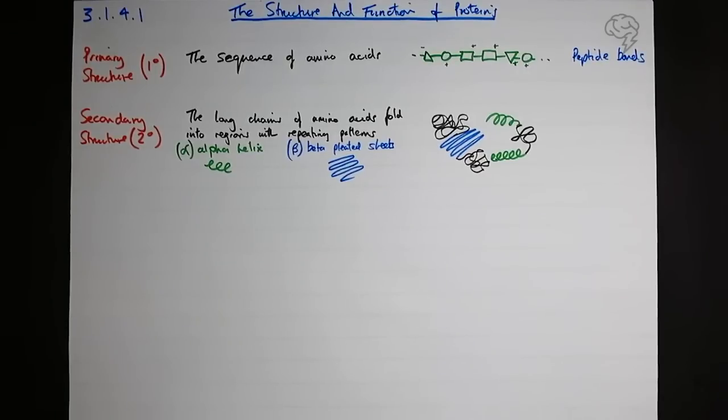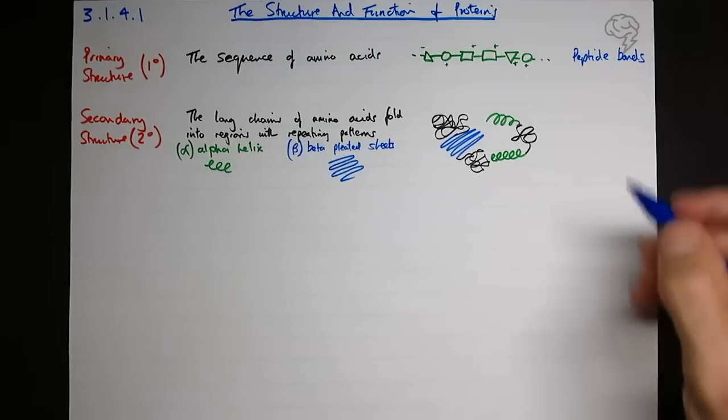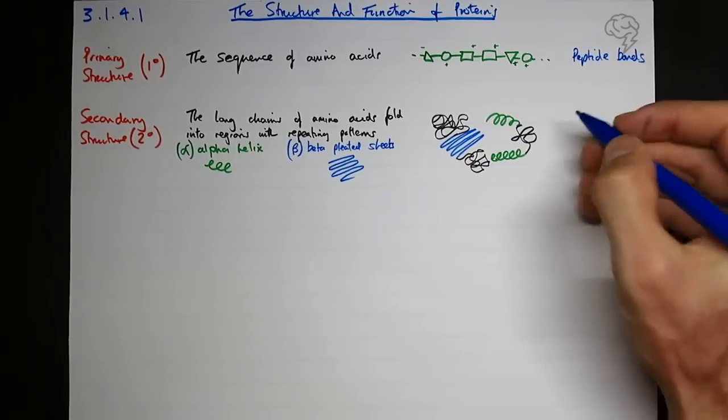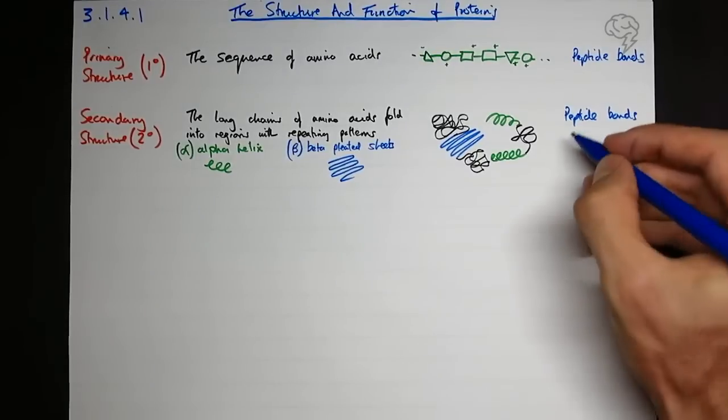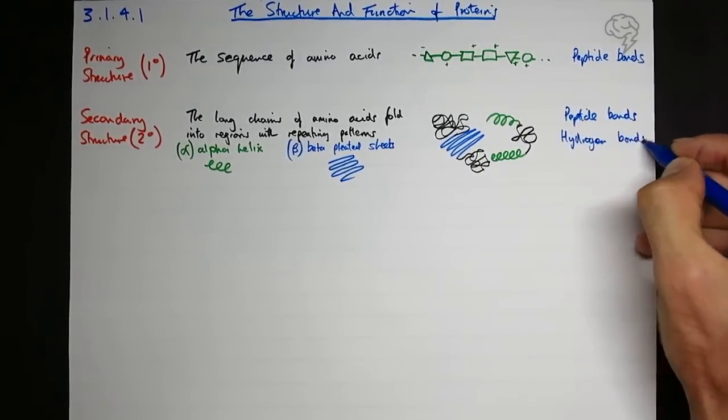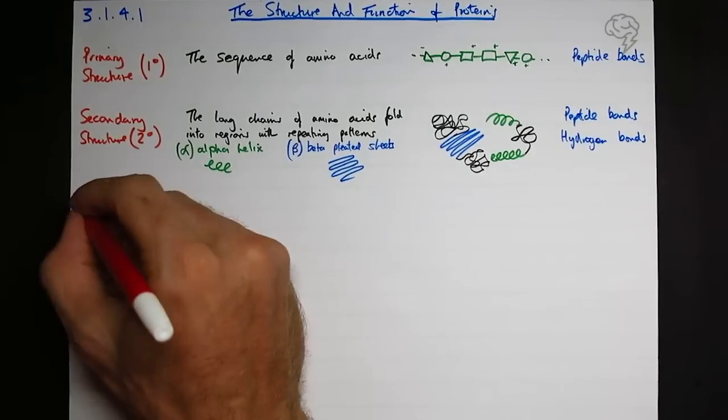So these are regions within the protein. What bonds are there forming these? Well, we've got the peptide bonds because this is all the primary structure that's making this up, so we've got peptide bonds and the bonds that hold these together are hydrogen bonds. Okay, tertiary structure, 3°.